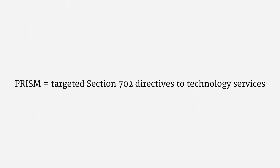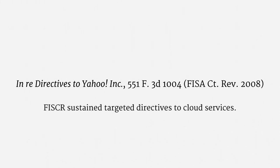I want to emphasize that these are targeted directives. The NSA only receives information about specific sets of individuals. PRISM is not a bulk surveillance program — it's a big surveillance program, but it is targeted. In 2008, the FISC-R sustained these targeted directives under the Protect America Act, the predecessor to the FISA Amendments Act. Yahoo's challenge actually involved Americans who were targeted. That part of the Protect America Act was not renewed, so while the opinion doesn't squarely address surveillance targeting foreigners, it's generally been read to sustain the entire PRISM program.